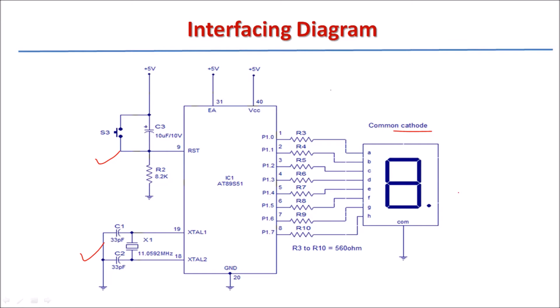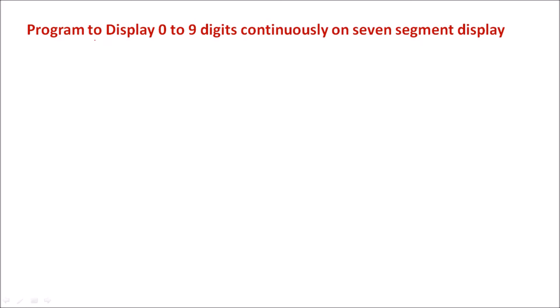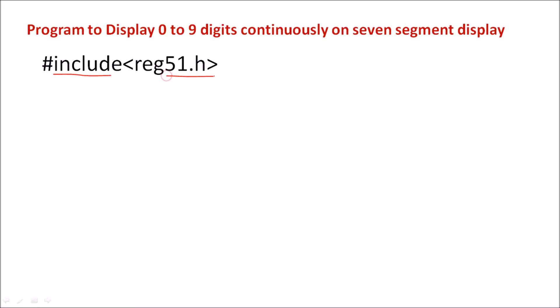So we will write an Embedded C program. We are going to write an Embedded C program to display digits 0 to 9 continuously on this 7-segment display. In Keil software, we have to include this file. First, hash include reg51.h — this file we have to include. Then here a delay function is written, that is void delay.